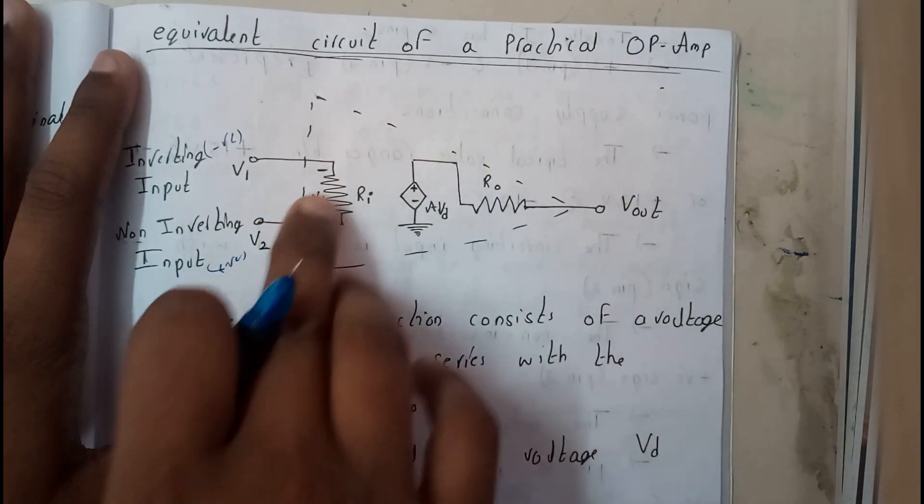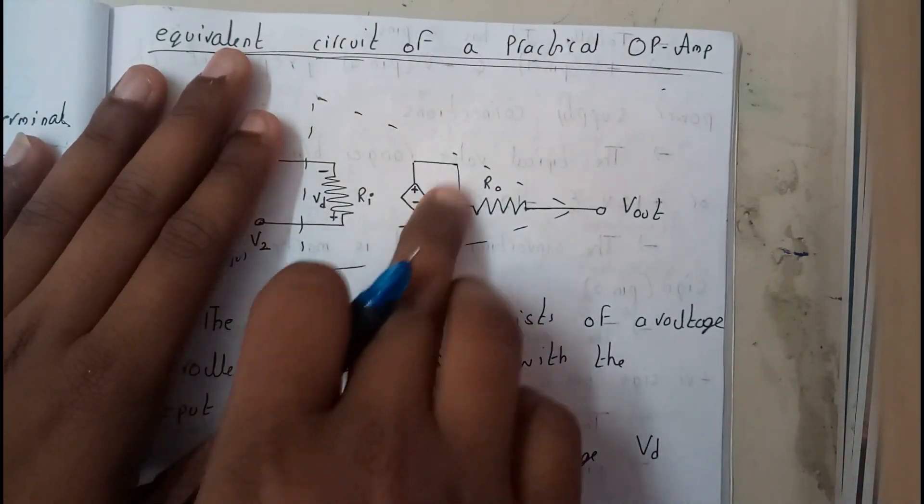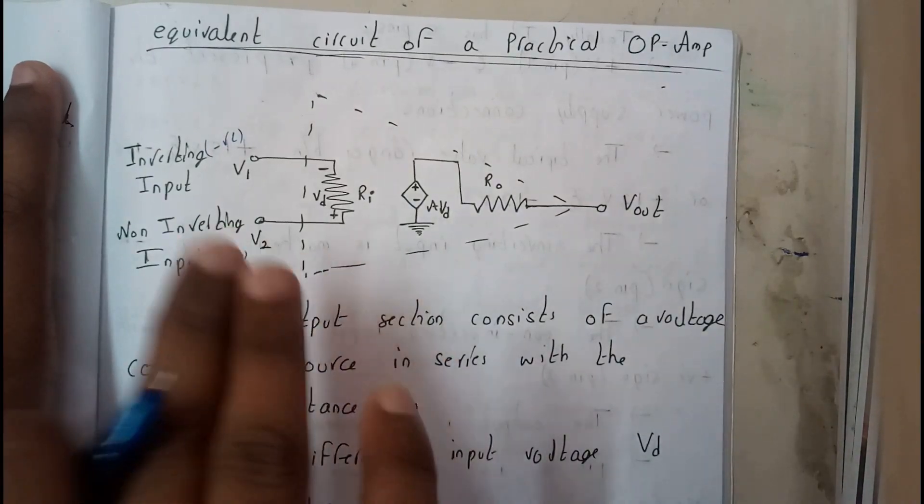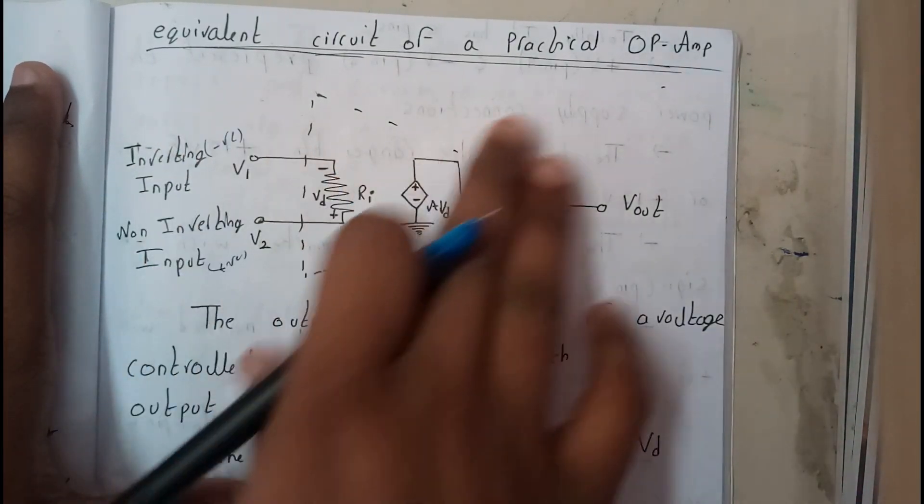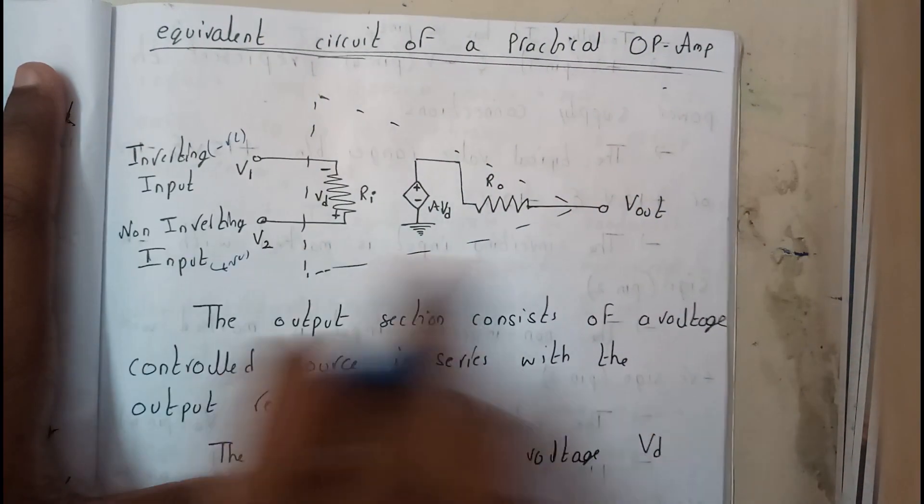So the internal will be like this, there will be a resistor here, this output is given to a resistor and it's given to a diode. So this will be our equivalent circuit of practical operational amplifier. So now I hope everyone is clear with this diagram.